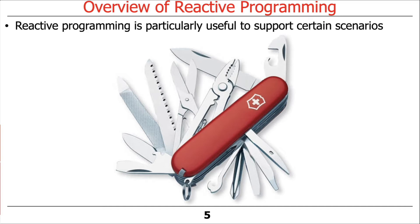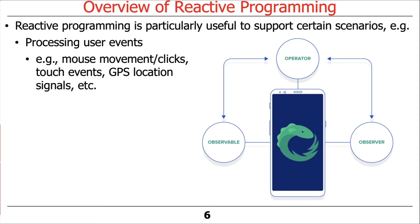Reactive programming is particularly useful for certain kinds of use cases. One very popular use case, especially in Android programming, is handling user events in the context of a graphical user interface. These include things like mouse movements, mouse clicks if you're using a laptop or desktop, touch events if you're using a mobile device with a touchscreen or a touchpad, and GPS location signals — all kinds of things driven by user interactions.